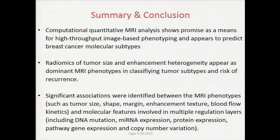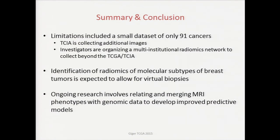In summary, computational quantitative MRI analysis shows promise as a means for high-throughput image-based phenotyping and appears to predict breast cancer molecular subtypes. Radiomics of tumor size and enhancement heterogeneity appear as dominant phenotypes in classifying these subtypes and risk of recurrence. Significant associations were identified between phenotypes and molecular features involved in multiple regulation layers. A main limitation is that there are only 91 breast MRI cases, even though there are a thousand breast cancers in the TCGA. TCIA is collecting additional images, and we're also organizing a multi-institutional radiomics network to collect cases. At my institution, we've collected 800 breast cancer cases with MRI, and we're collecting the pathology and, if possible, the genomics on them to validate these promising features.